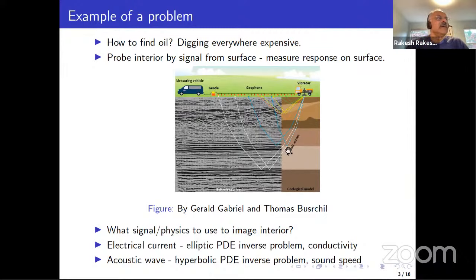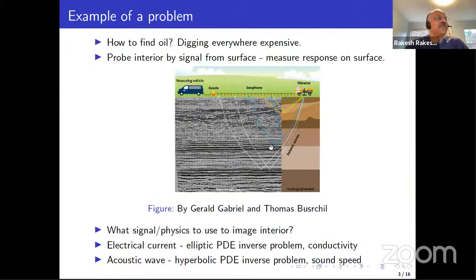Instead of sound waves, some companies like Schlumberger use oil well logging with electrical currents — they send electrical currents and measure the response. If you use electrical currents, the physics is different and it results in studying an inverse problem for an elliptic PDE, where you're trying to recover the conductivity of the medium. If you send sound waves, that gives rise to hyperbolic PDE inverse problems, and what you're trying to recover is the sound speed.